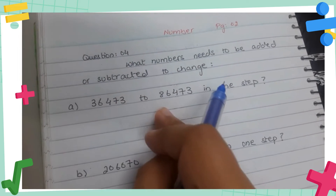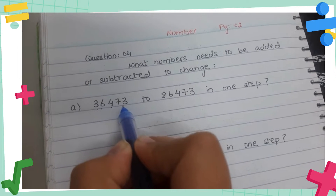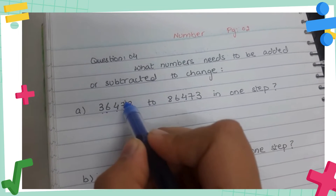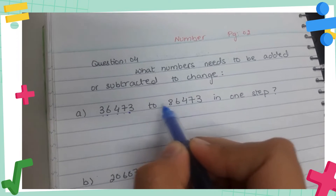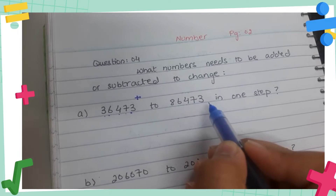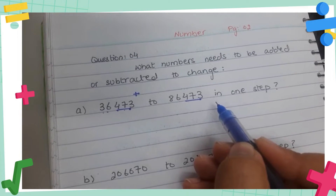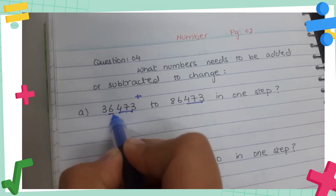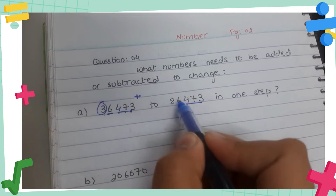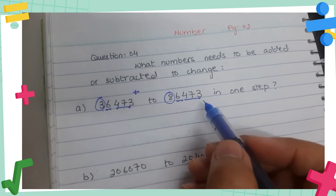Our first step is to recognize whether the number we need to convert is bigger or smaller. The number is 36473 and we need to convert it into 86473. It's quite clear — the number we are going to change to is the bigger one, so it means we need to add. The difference is between the 8 and the 3 — these are different.